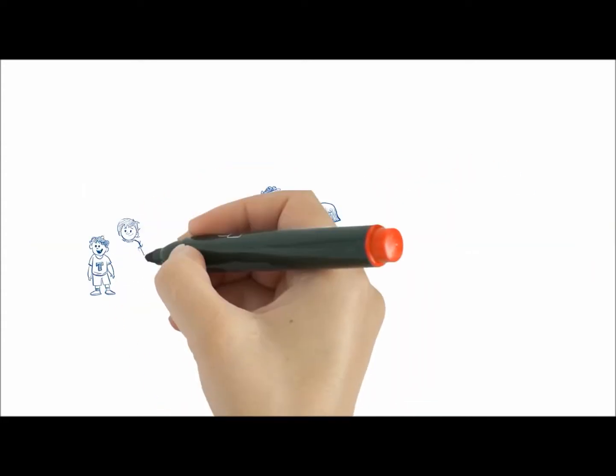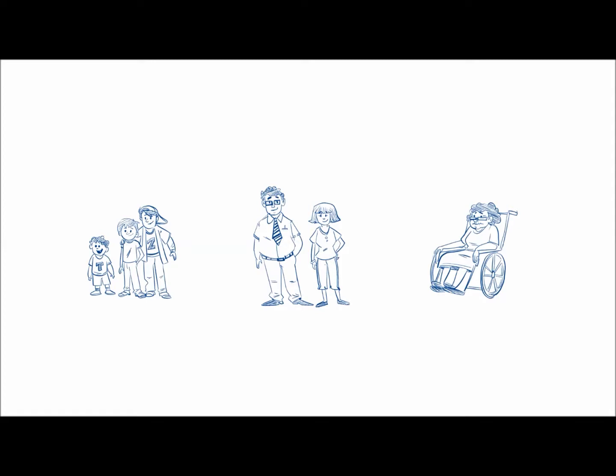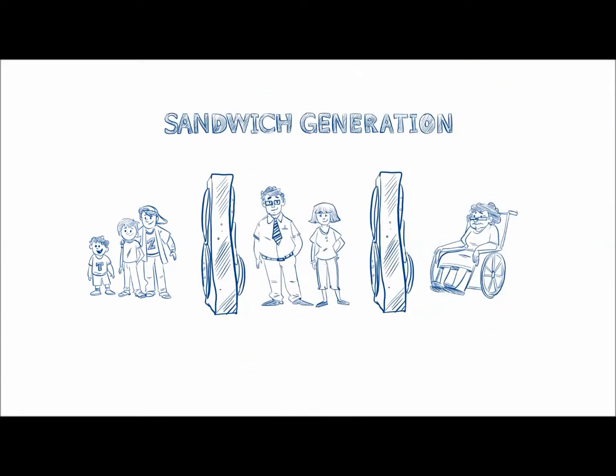Bob and Laura have three kids. They're also taking care of Laura's mom, who's in her 80s. They are sandwiched between their younger kids and their older parents.